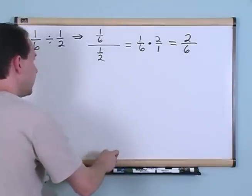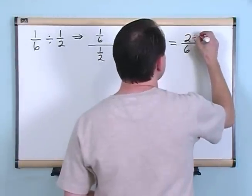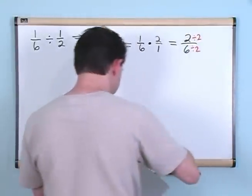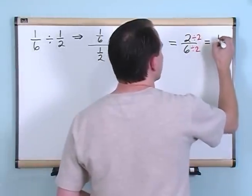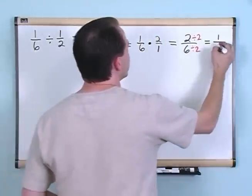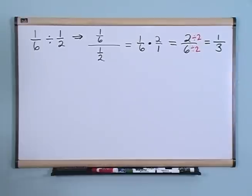Then just like any problem, you always check and see if you can simplify it. Here you can because you can divide by 2 and you can divide by 2. 2 divided by 2 is going to give you 1. 6 divided by 2 is going to give you 3. That's the answer, 1/3.